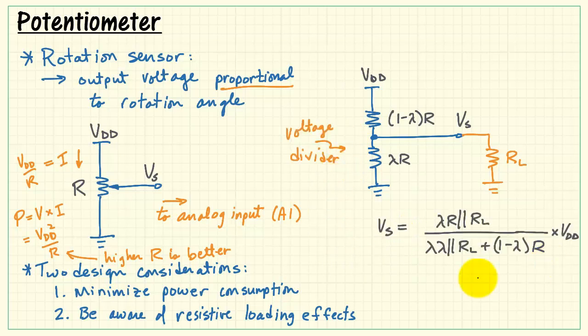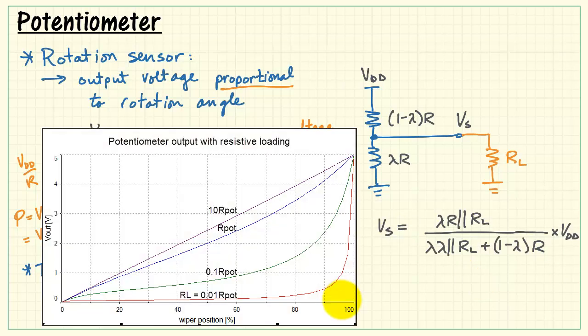The potentiometer resistors form a voltage divider. I have the expression for Vs listed here. And then I'm plotting the potentiometer output, Vs, as a function of the wiper position in percent. For VDD equals 5 volts, we have a range of 0 to 5 volts for our rotation sensor.